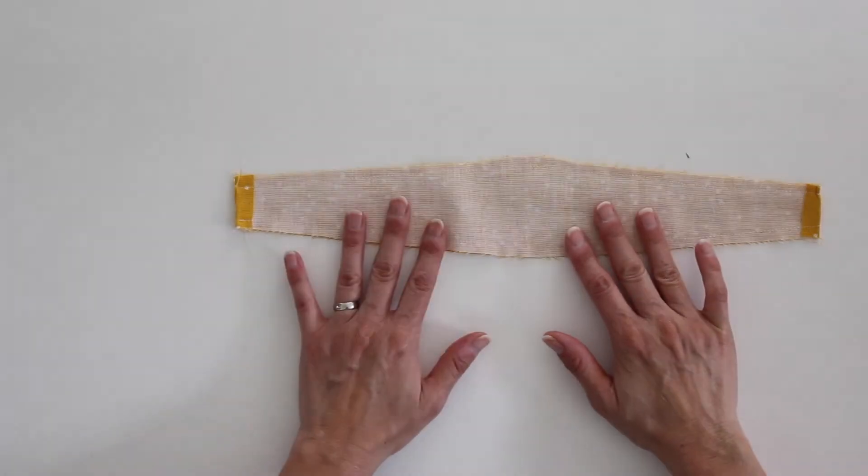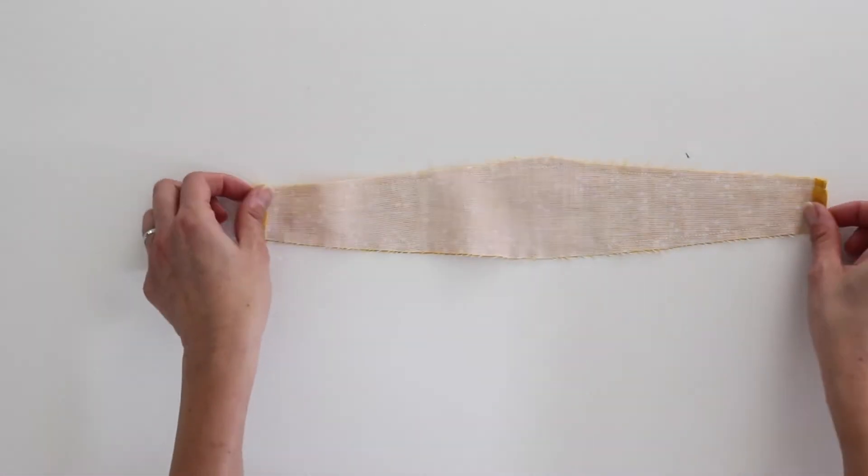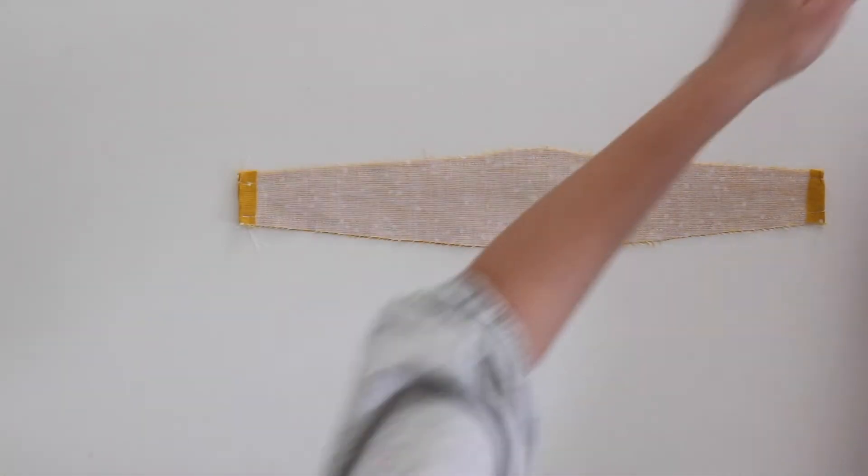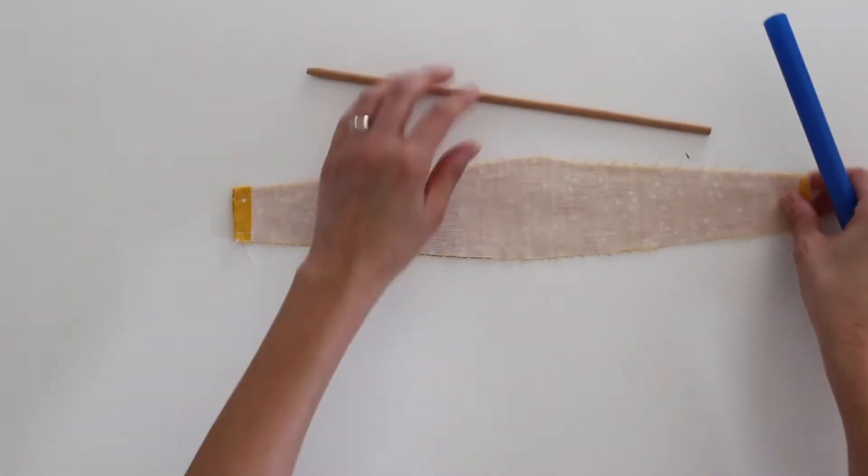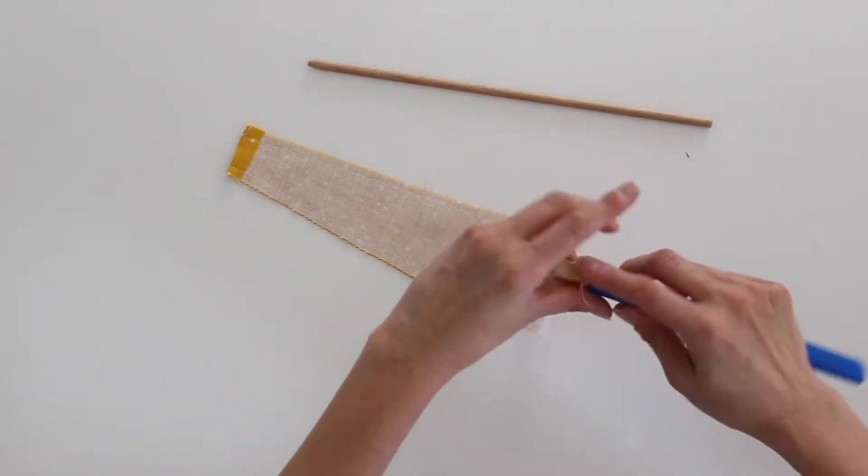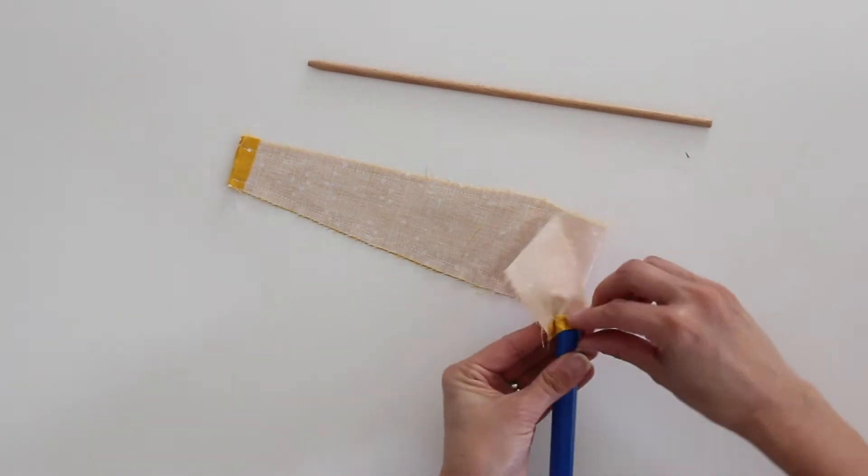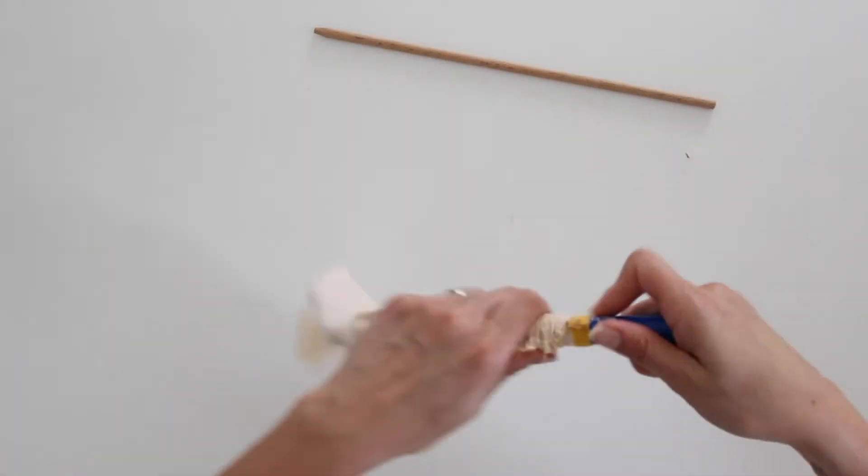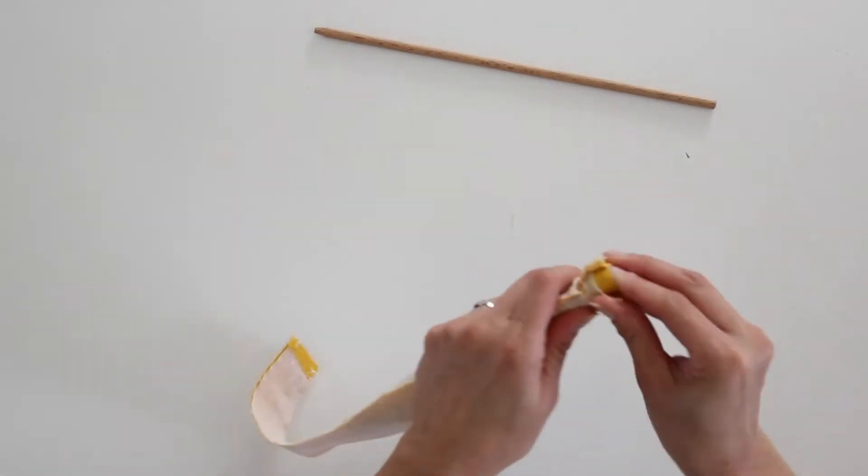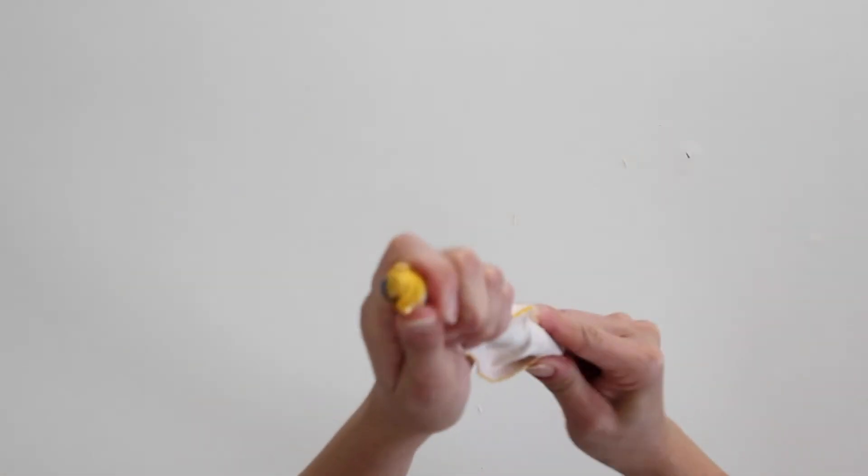Once you have sewn the two pieces together, you're going to want to turn this right side out. And I'm going to be using a tube turner for that. If you don't have a tube turner, you can use a safety pin and hook it into one end and use that to turn it right side out. This tube turner is really handy and I have linked it below.